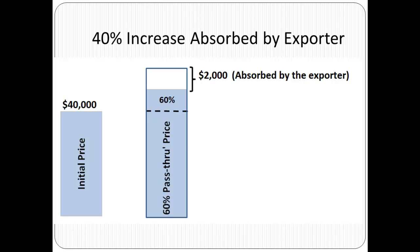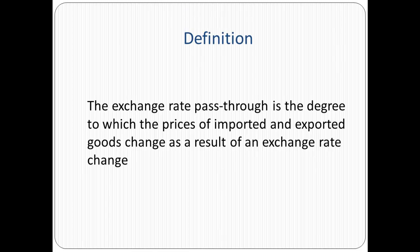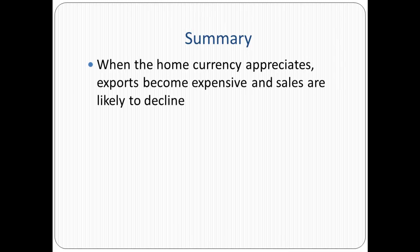The price rises from $40,000 to $43,000. 40% has been absorbed by the exporter. The price would have been $45,000, but because the exporter absorbs $2,000 — or 40% — the price is $43,000. It's important to keep in mind that the exporter absorbs 40% of the $5,000 price increase, not of the original price. The exchange rate pass-through is the degree to which the prices of imported and exported goods change as a result of an exchange rate change.